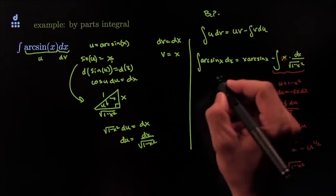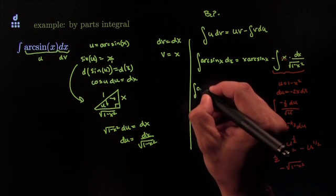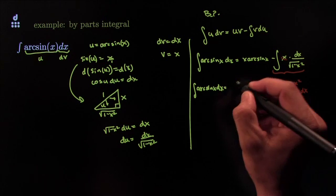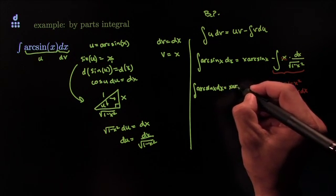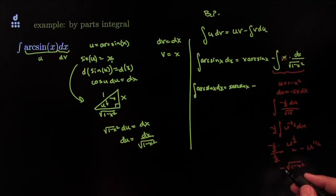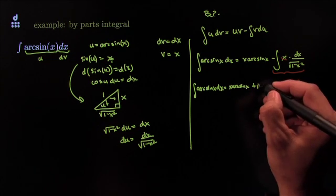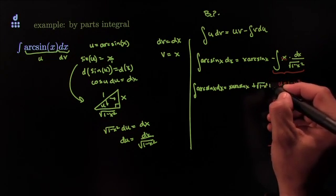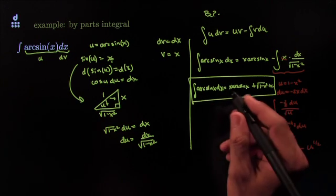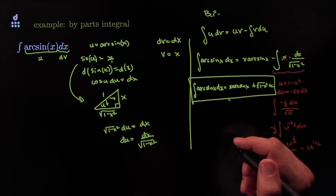So put all that together, and we get that the integral of arcsin of x dx is equal to x arcsin of x minus this whole thing, which is that. So it's plus the square root of 1 minus x squared plus a constant. That, my friends, is one way to do the antiderivative arcsin. That was fun, right? See you guys next time.